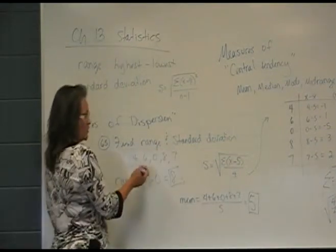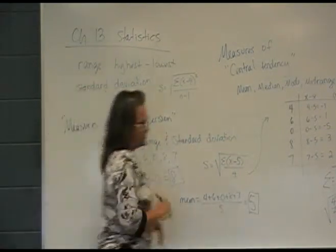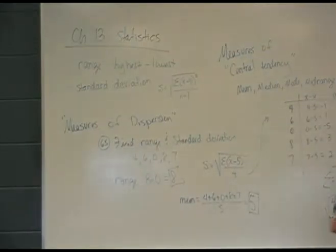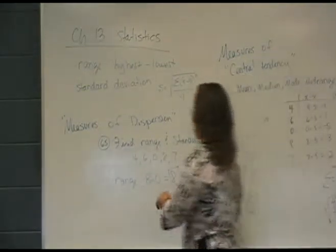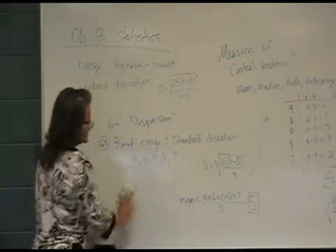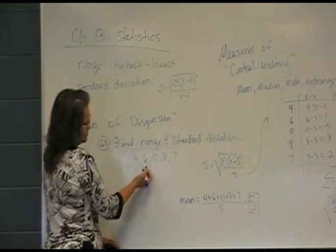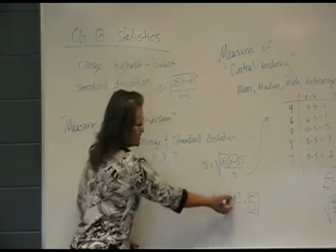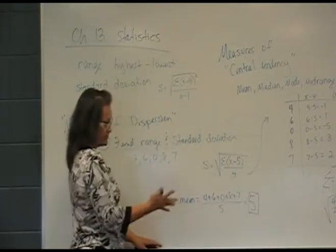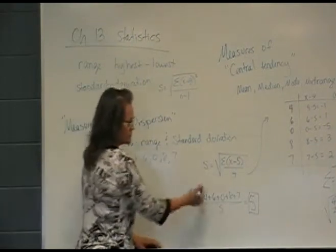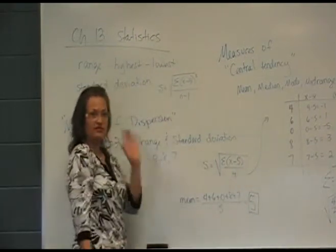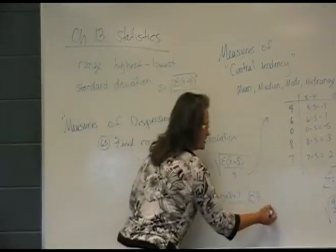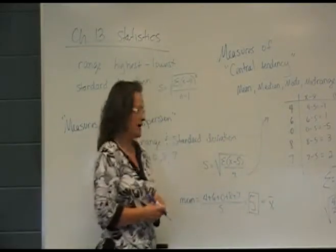First, I need to know what the mean is for those five numbers, so I'll add them together and divide by 5. Adding 4 plus 6 plus 0 plus 8 plus 7, divided by how many numbers there are — there are five numbers — that comes out to be 5. So the mean, or x-bar, is 5.